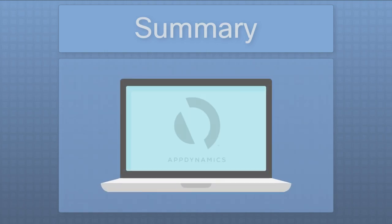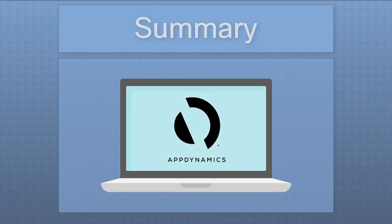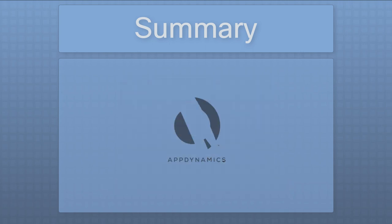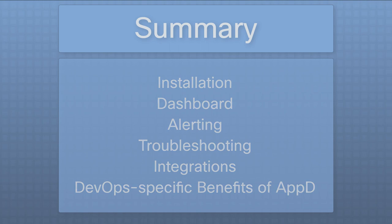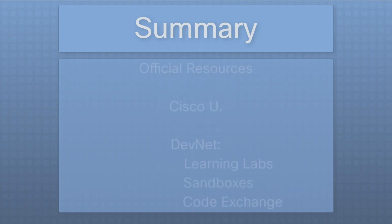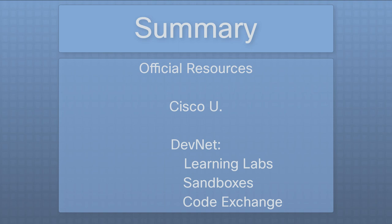In this video, we've discussed what AppDynamics is and how to use it to gain visibility into our networks and application interactions. We specifically discussed the installation, dashboard, alerting, troubleshooting, integrations, and DevOps benefits of AppDynamics. Finally, we've reviewed the official resources as well as the large array of resources for learning and practicing AppDynamics, which can be found at Cisco U and Cisco DevNet, including the Learning Labs, Sandboxes, and Code Exchange.